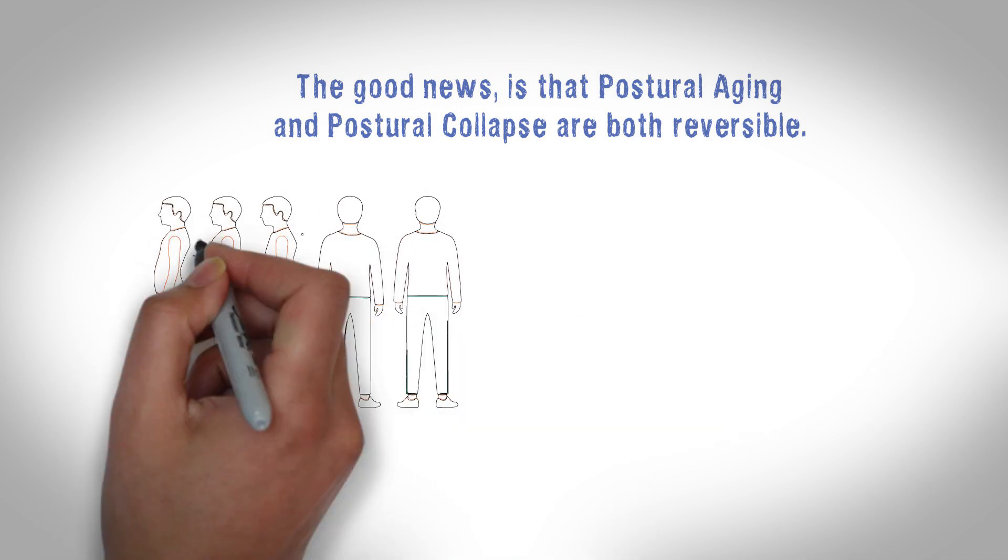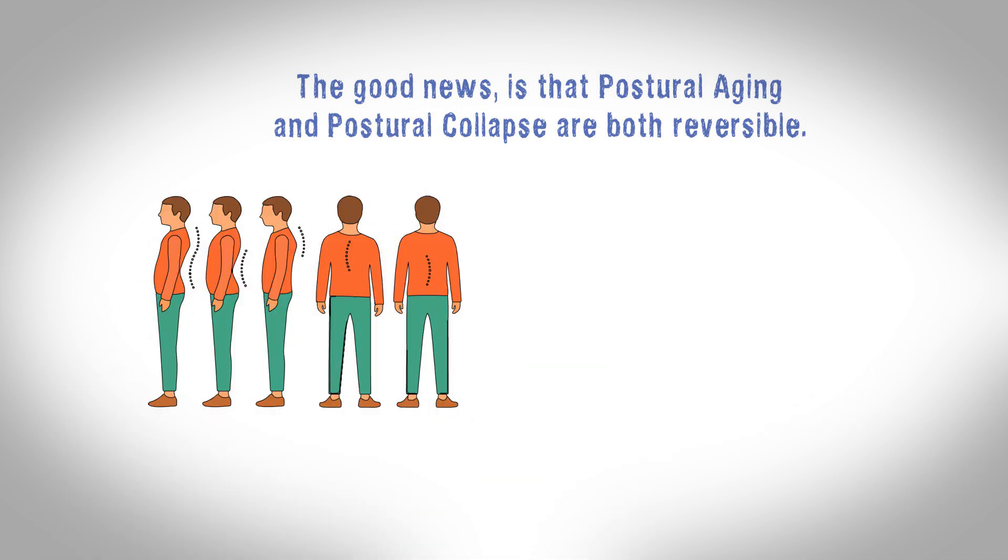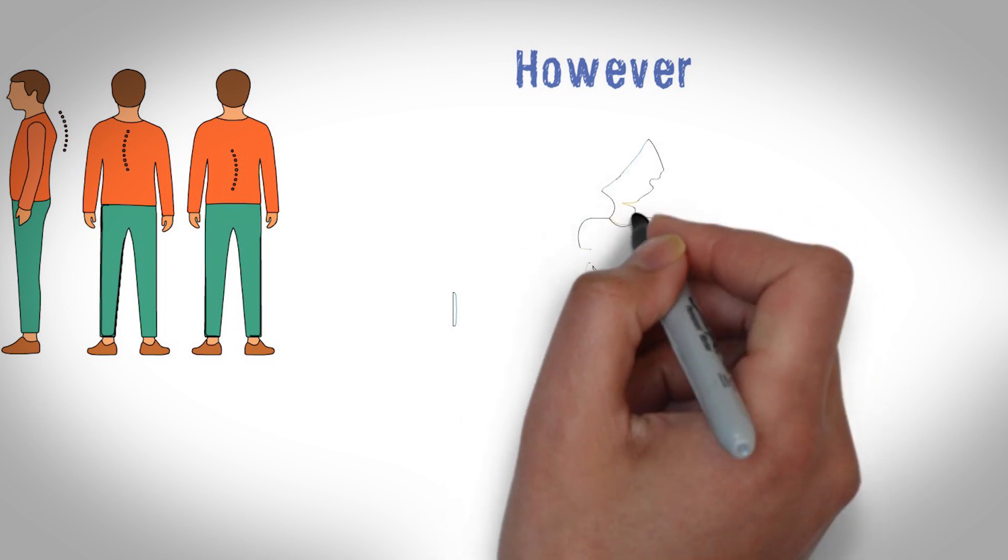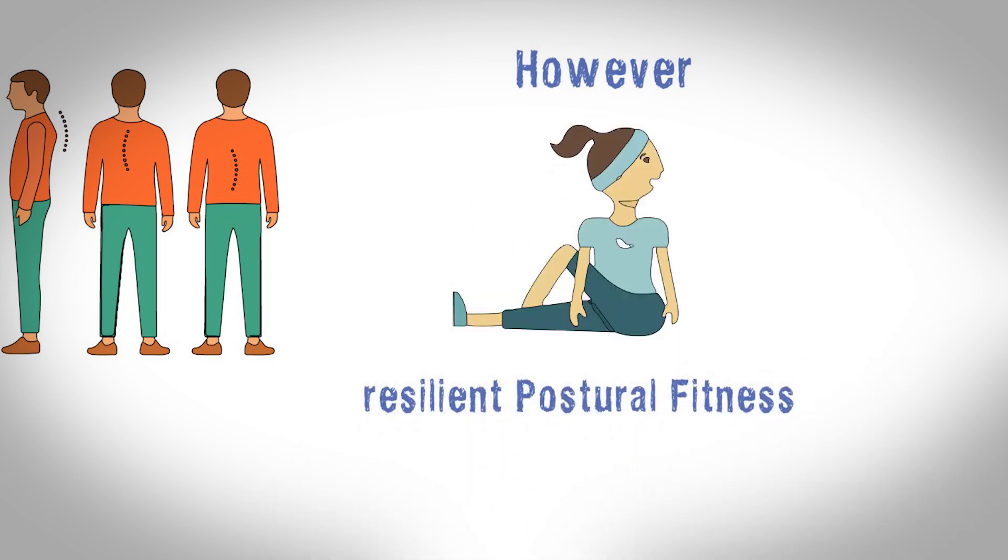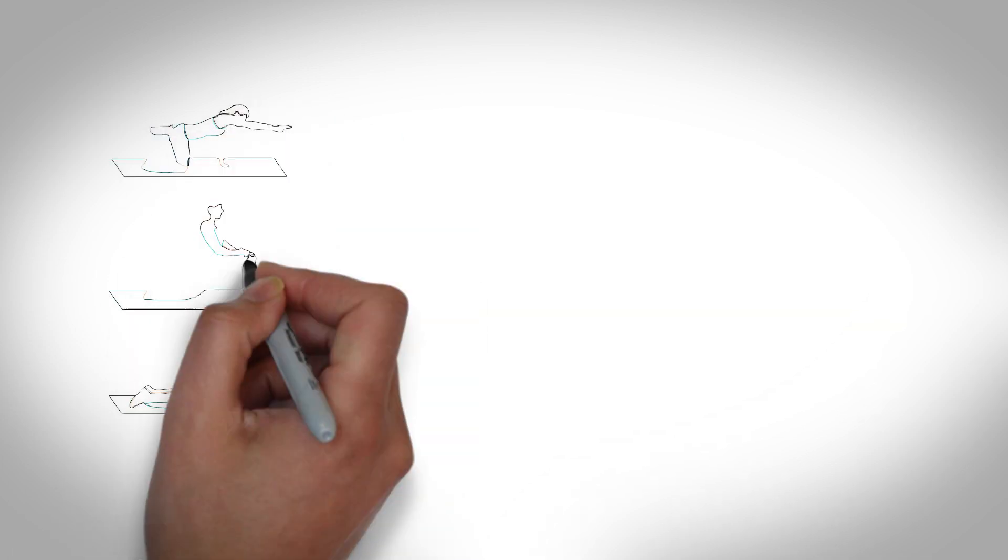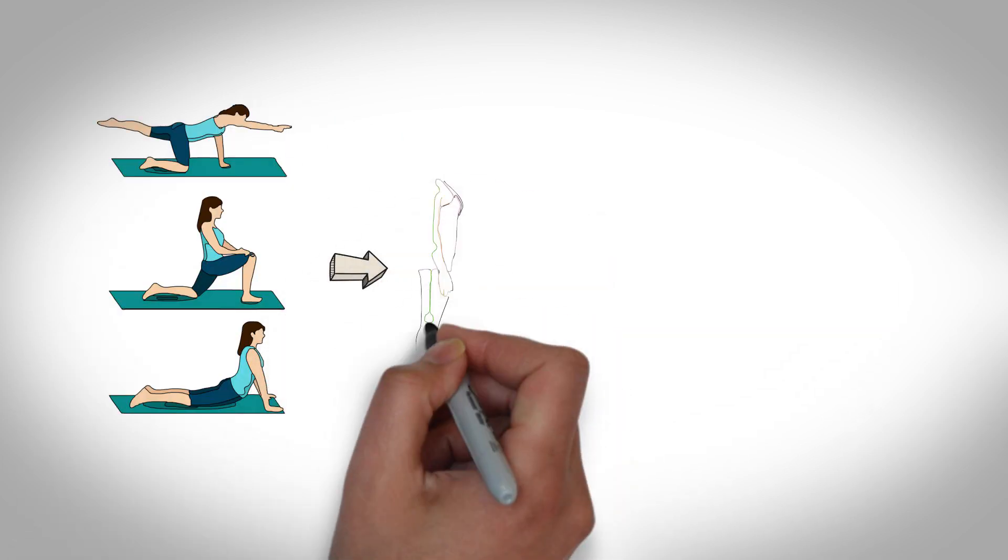Chronic postural distortion patterns may take longer to reverse, especially if there's structural damage. However, with dedication to your postural correction program, you can achieve resilient postural fitness. Postural fitness means that your body resists gravity with utmost efficiency, meaning you can keep your body upright without collapsing forward with the pull of gravity.